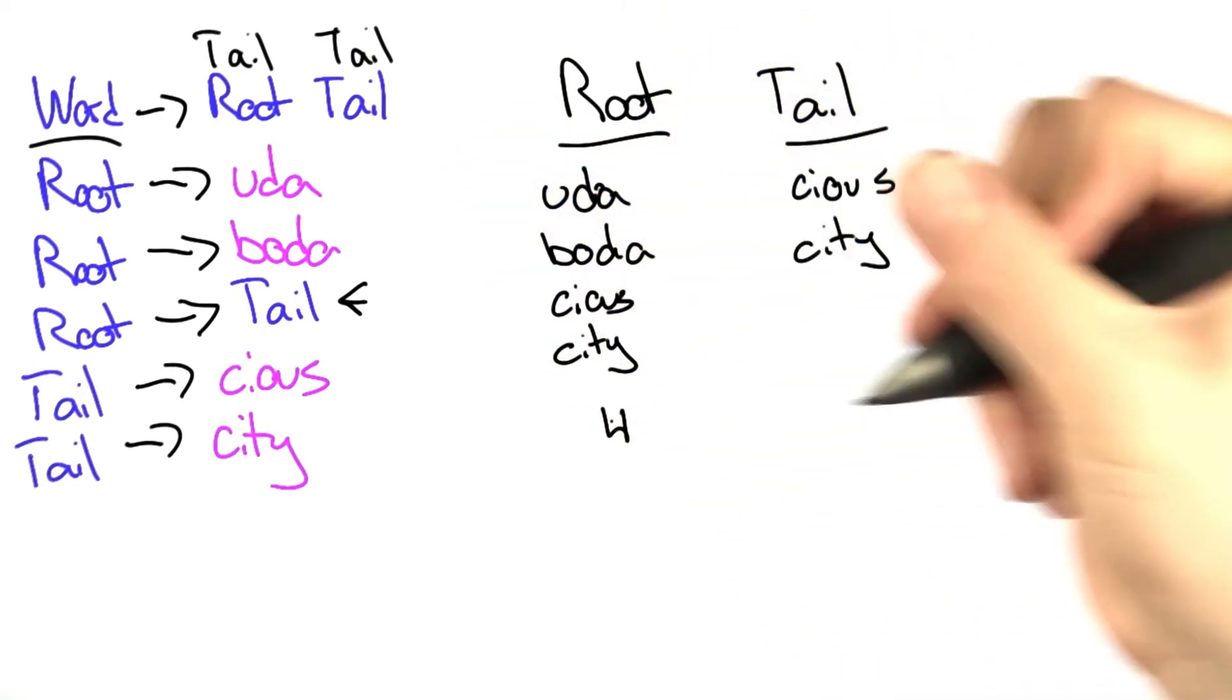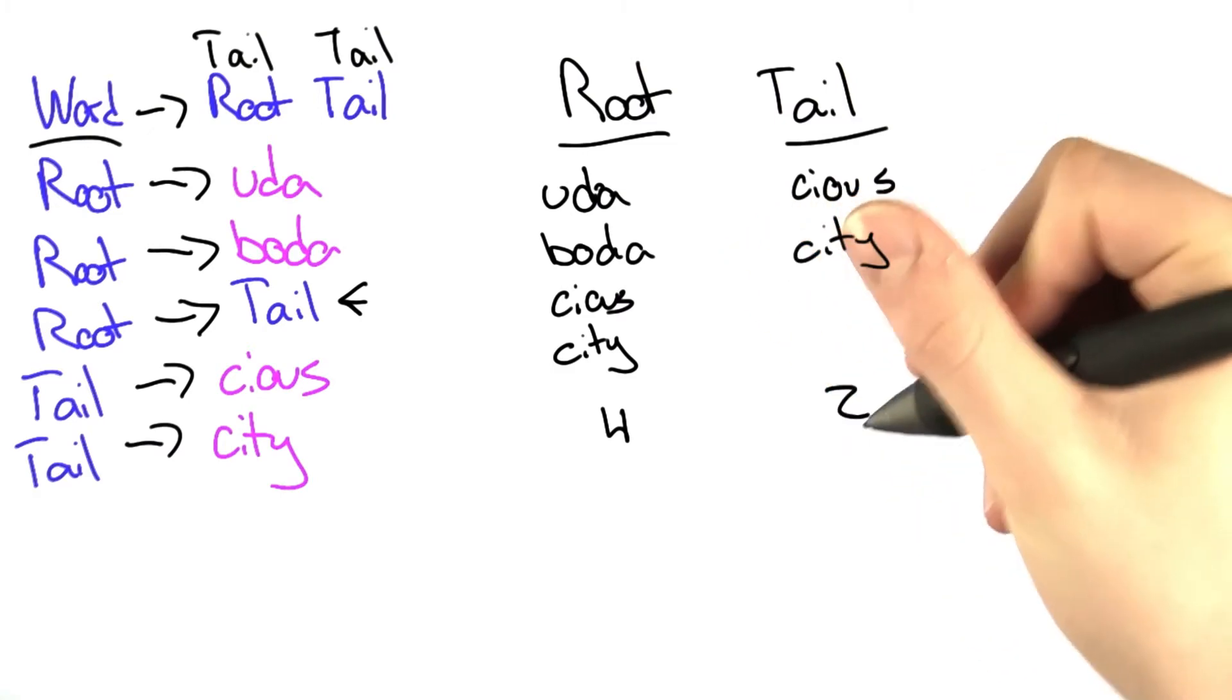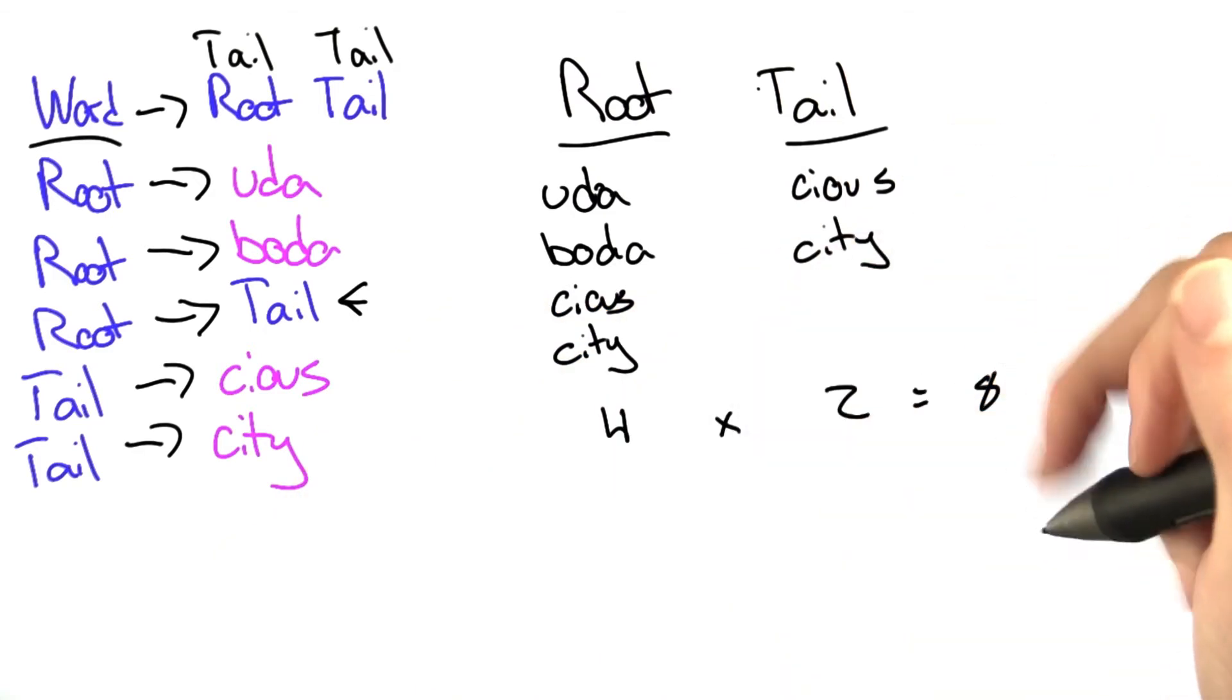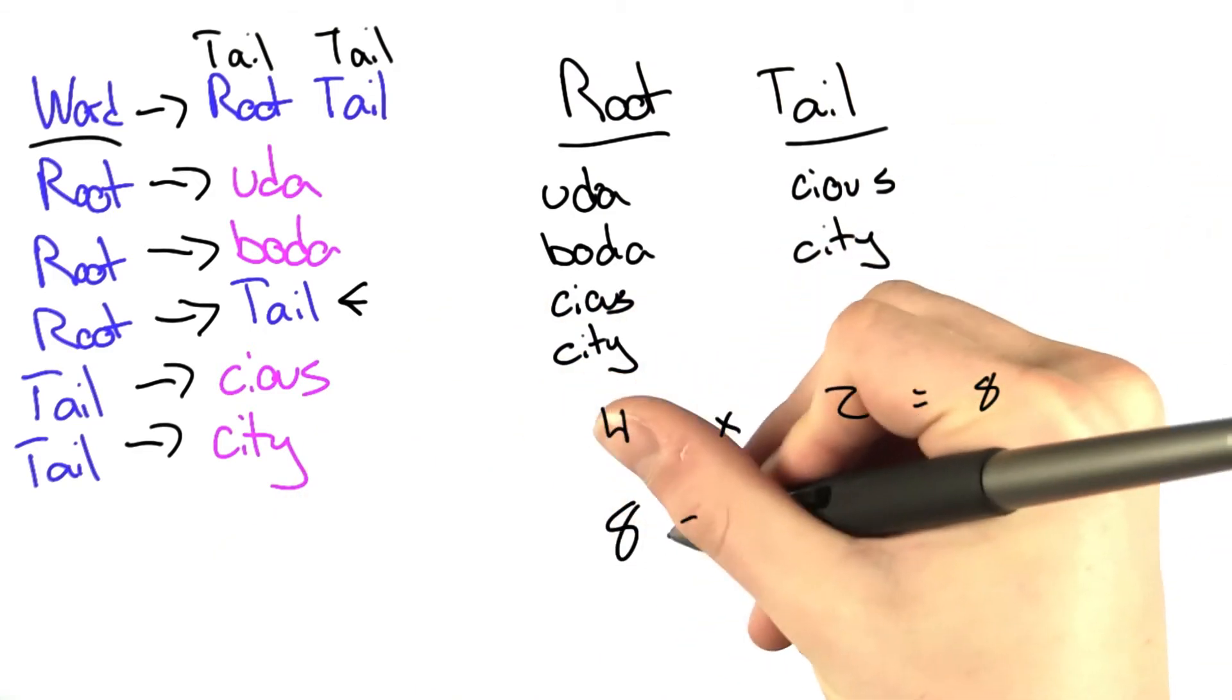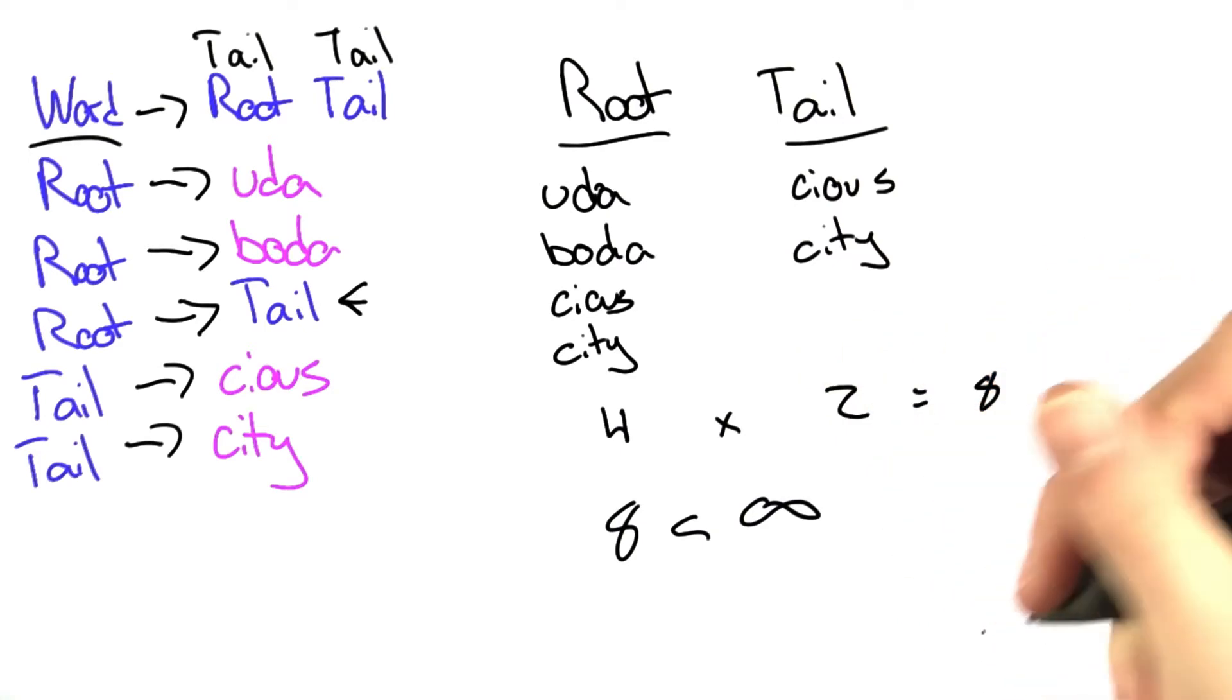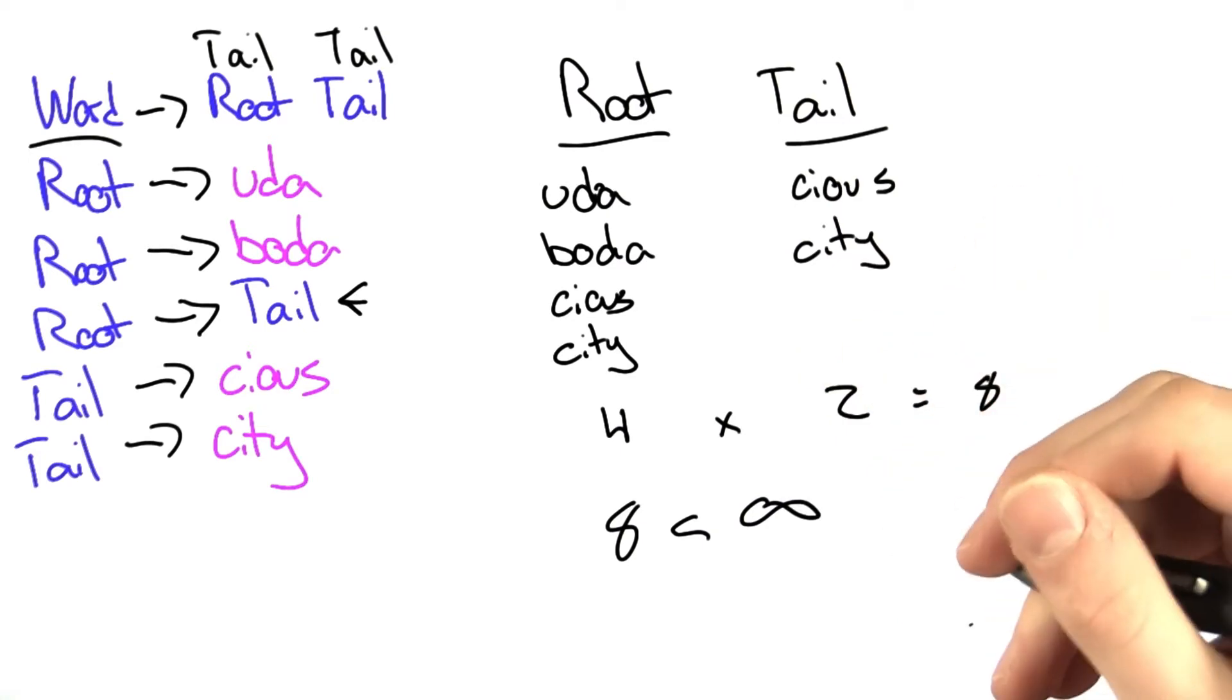This gives us four possibilities for root and two possibilities for tail, which means eight possibilities altogether. This grammar can generate eight different words. We know that eight is less than infinity, so this grammar does not generate an infinite number of words.